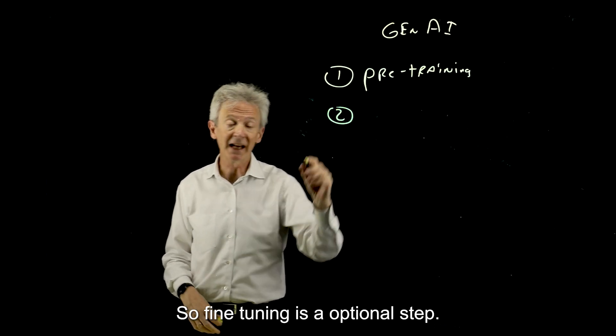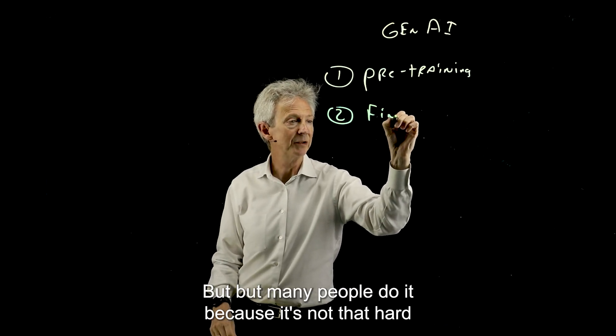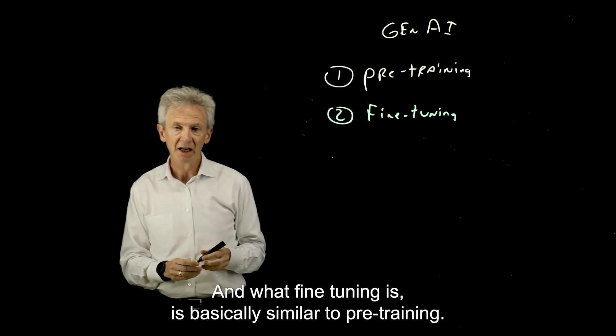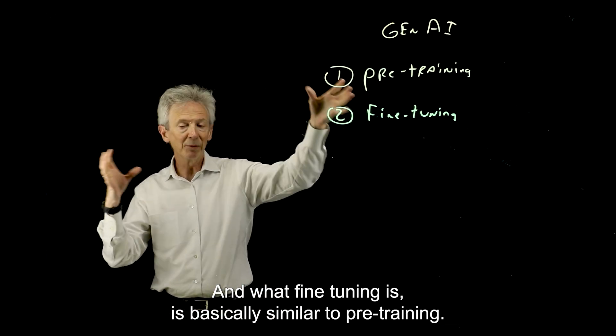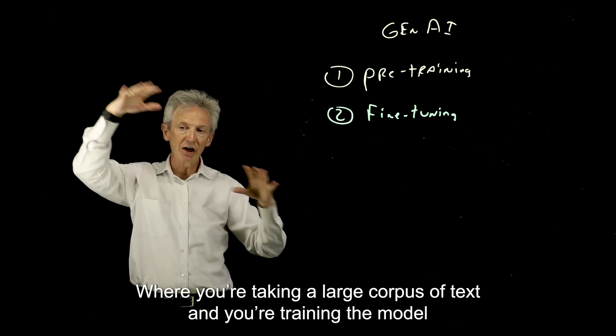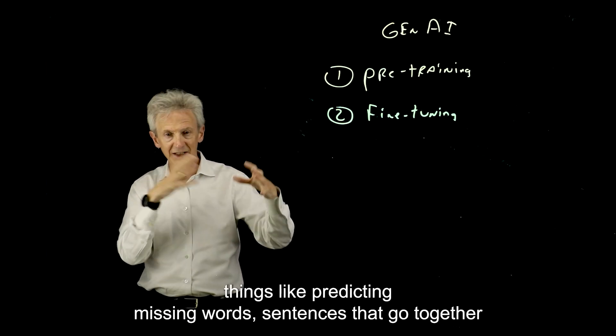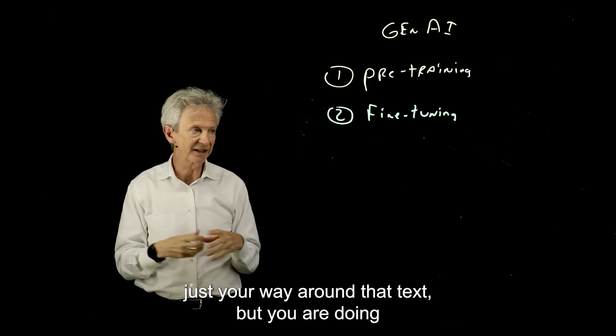So fine-tuning is an optional step, but many people do it because it's not that hard, and it really helps your model become better. What fine-tuning is is basically similar to pre-training, where you're taking a large corpus of text and you're training the model things like predicting missing words, sentences that go together, just your way around that text.